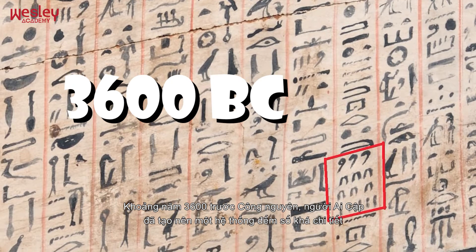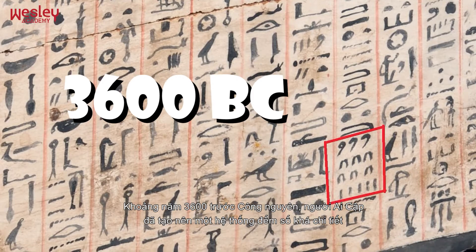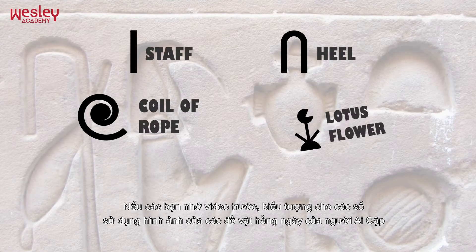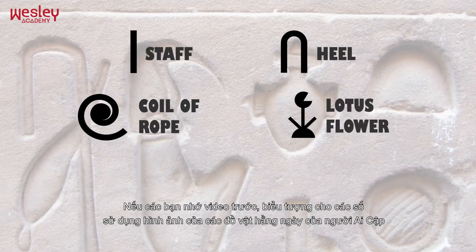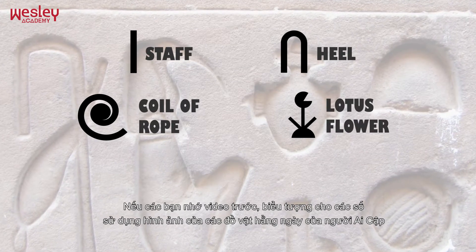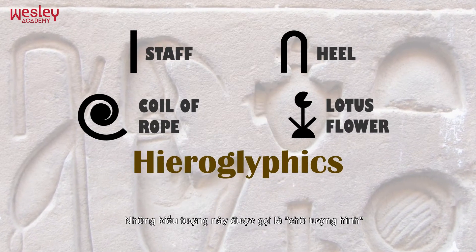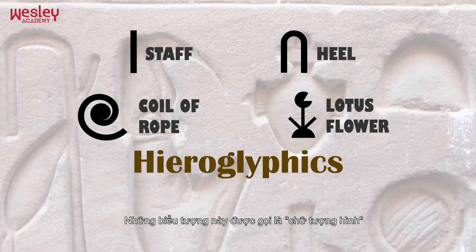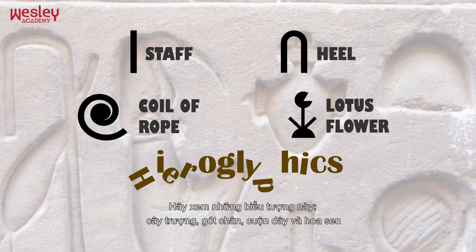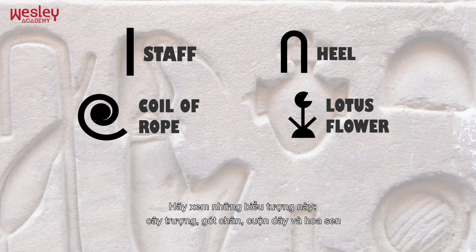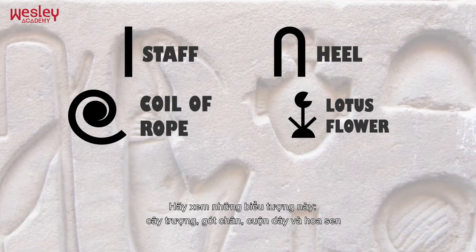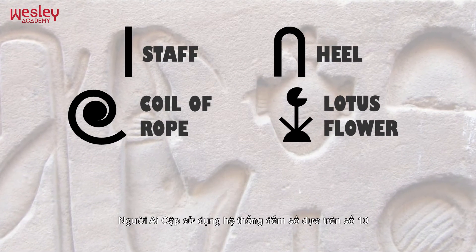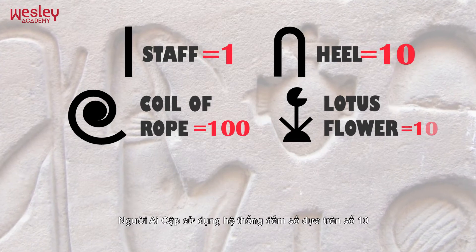Around 3600 BC, the ancient Egyptians came up with a detailed number system. The symbols used images of everyday things to represent numbers. These symbols are called hieroglyphics, which is translated as 'sacred picture writings.' Take a look at these symbols: the staff, the heel, the coil of rope, the lotus flower. The Egyptians used a tally system based on the number 10.